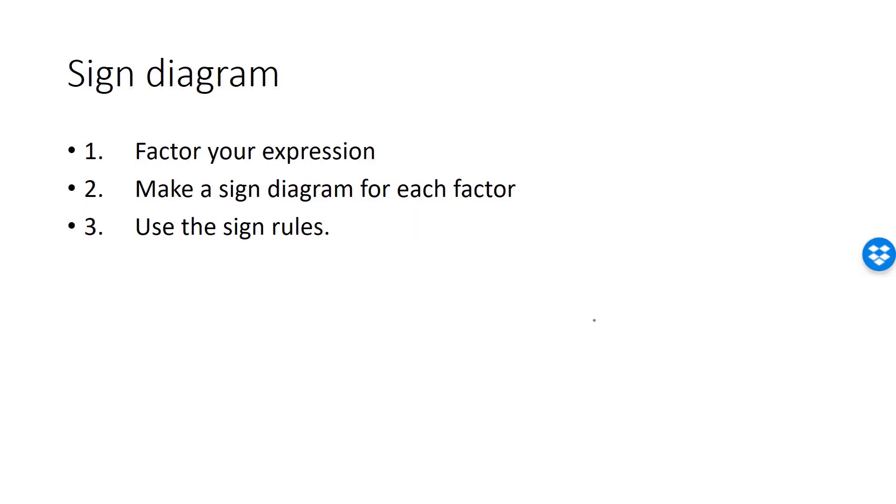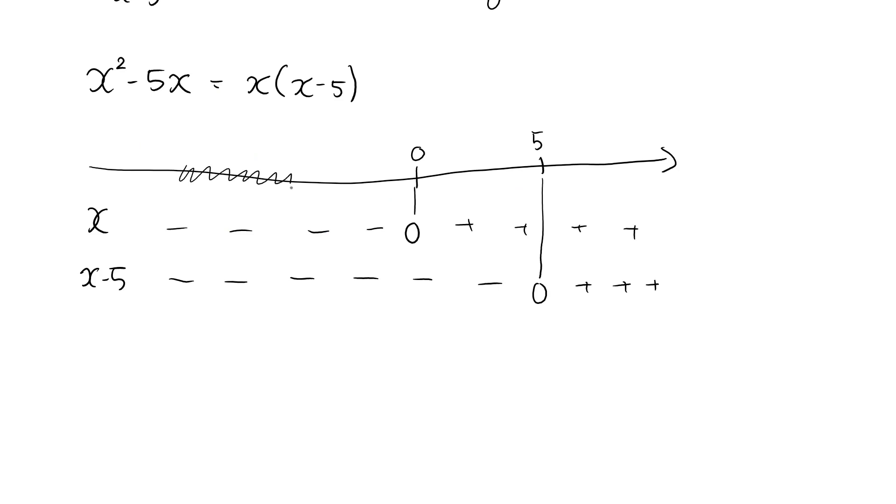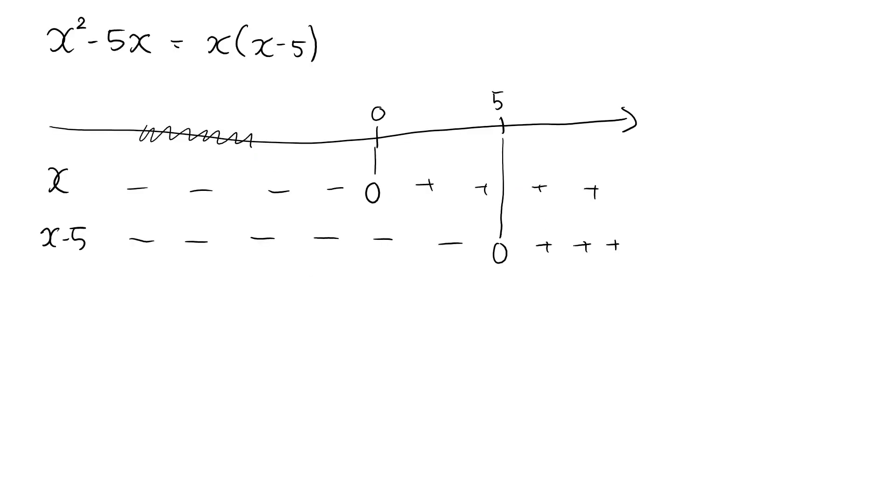In the final step, we use the sign rules to create a sign diagram for the product. When x is in this area, I know that the first factor x is negative. I know that my second factor x minus 5 is negative. And I also know that the product of two negative numbers is positive. The product of these two factors must be positive here.